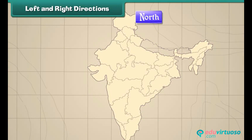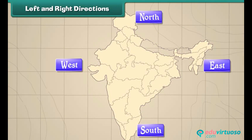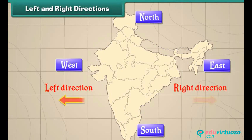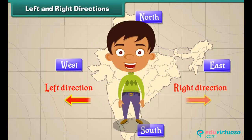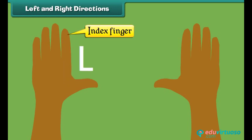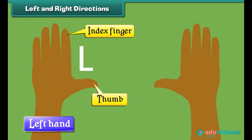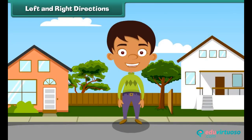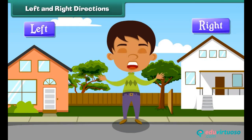In addition to north, south, west and east, we also use left and right directions to locate a place. We use our hands to indicate the left and right directions. The hand that makes the letter L when the index finger and thumb are stretched out is our left hand, and the other one is our right hand. The places towards our right hand are said to be on the right, and those towards our left hand are said to be on the left.